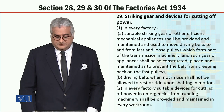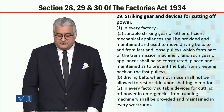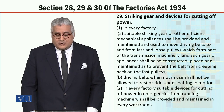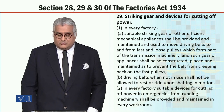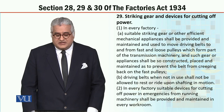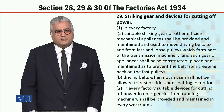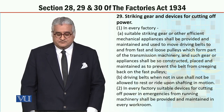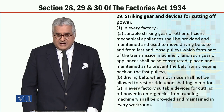Section 29 has the heading: striking gear and devices for cutting off power. Section 29, subsection 1: In every factory, suitable striking gear or other efficient mechanical appliances shall be provided and maintained, and used to move driving belts to and from fast and loose pulleys which form part of the transmission machinery. Such gear or appliances shall be so constructed, placed, and maintained as to prevent the belt from creeping back on the fast pulleys. In every factory, driving belts when not in use shall not be allowed to rest or ride upon shafting in motion.